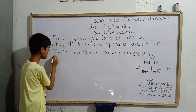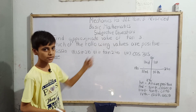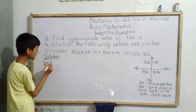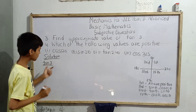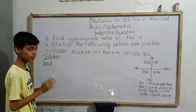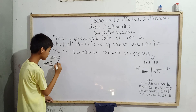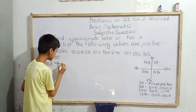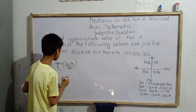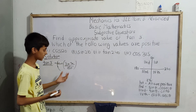Question number three asks us to find the approximate value of tan(3°). We have to find the approximate value. For that, we need to convert degrees to radians by multiplying the degree by π/180. So tan(3°) equals tan(3 × π/180).